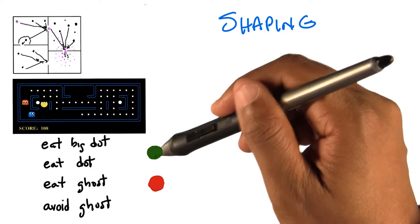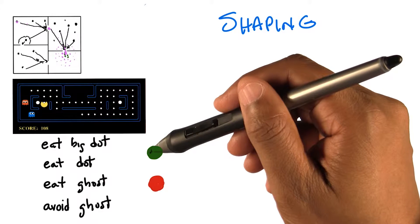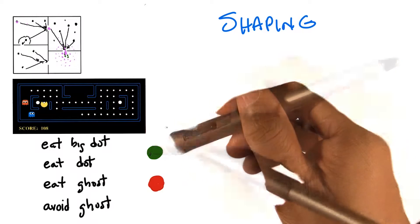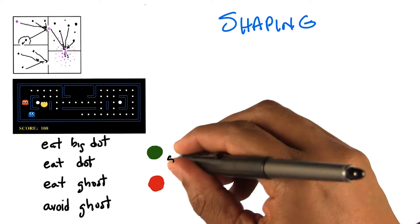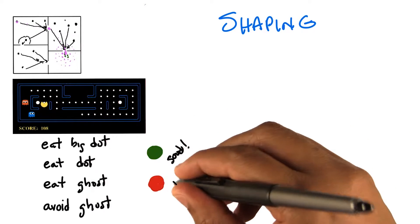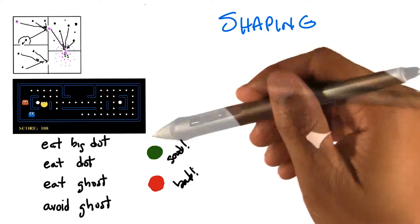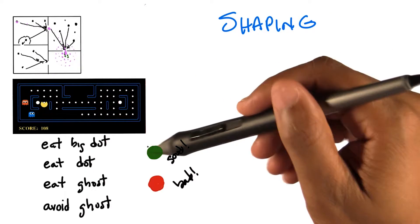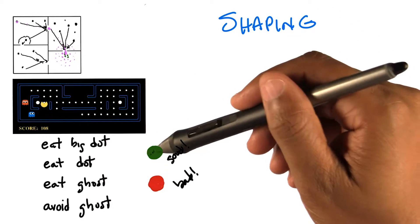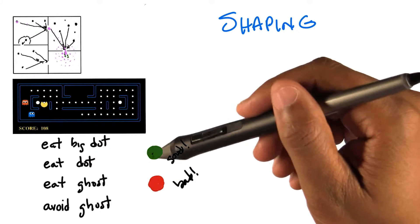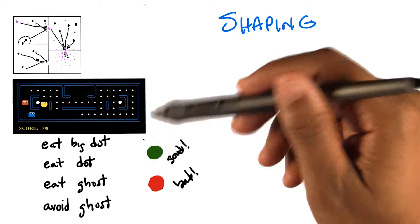And what do you think the green and red stand for? Probably green means the Pac-Man did something good, and red means the Pac-Man did something not so good. That's exactly right. So green is supposed to mean good and red is supposed to mean bad, just like you would expect. People would do this and say: that's good, that's bad, that's good, and so on and so forth.